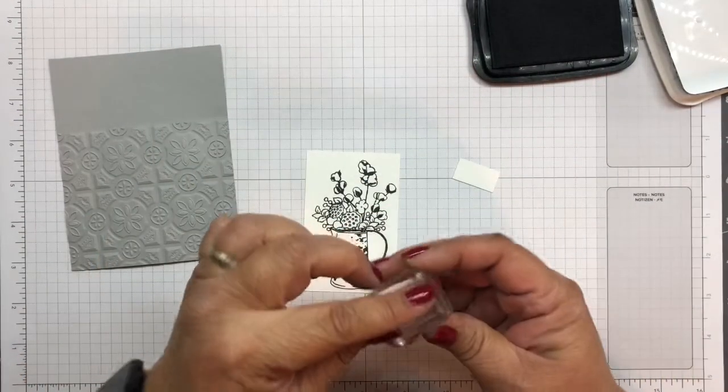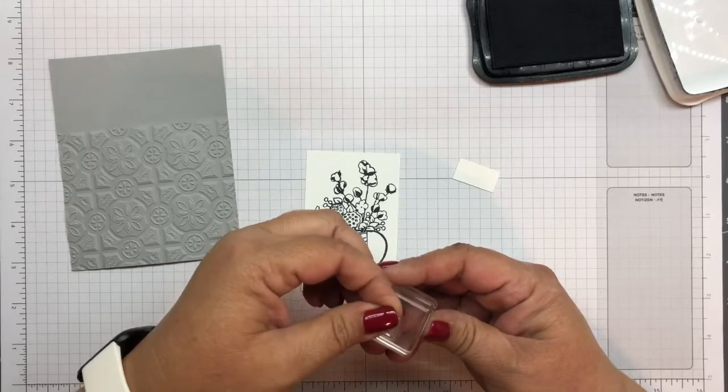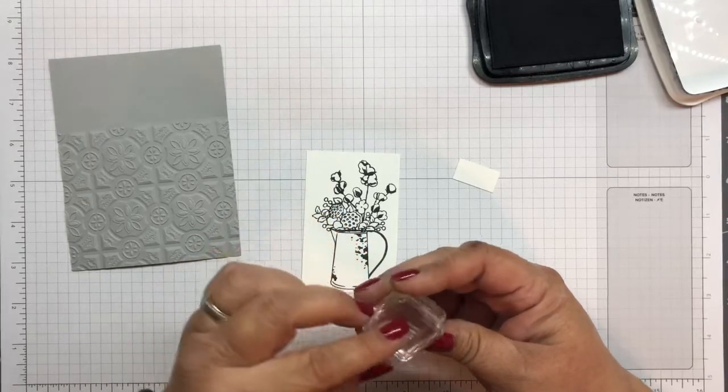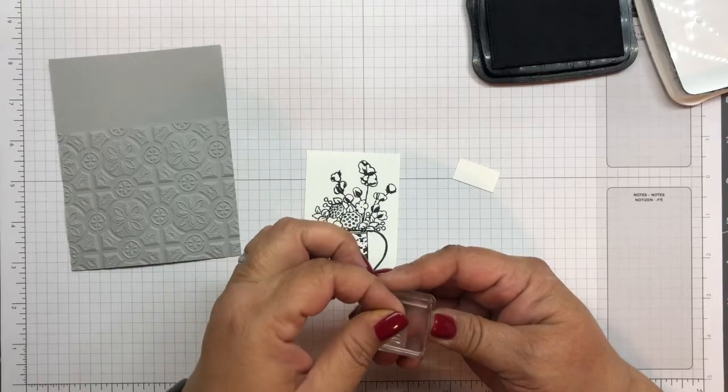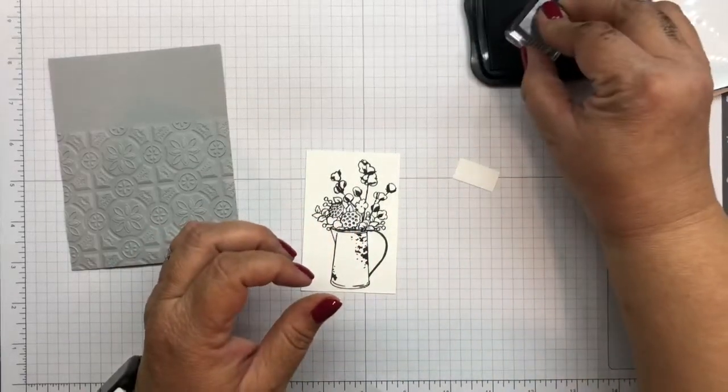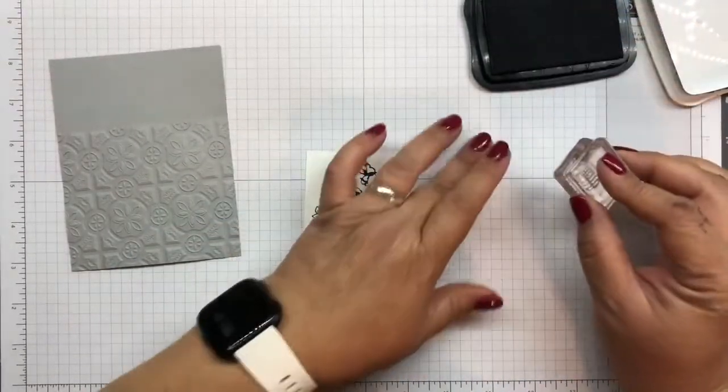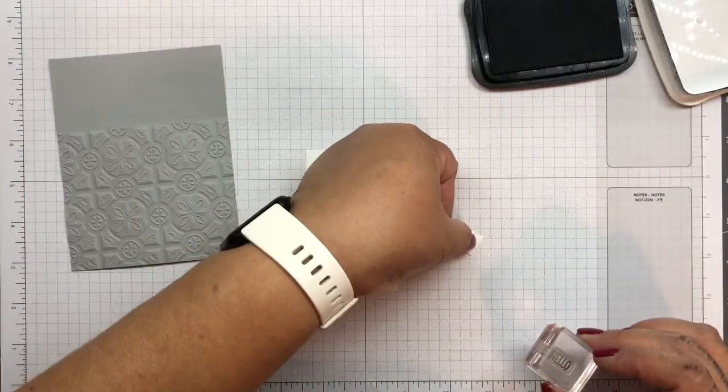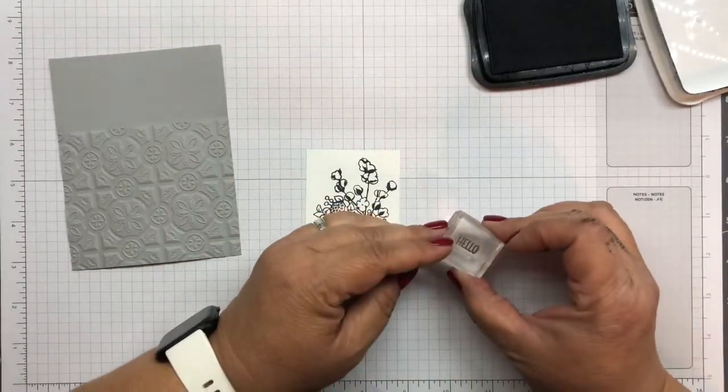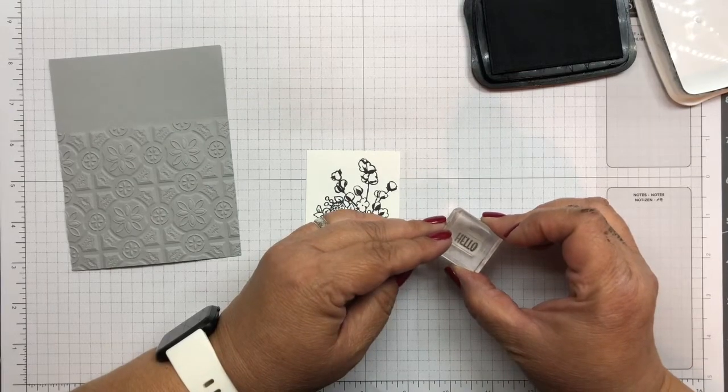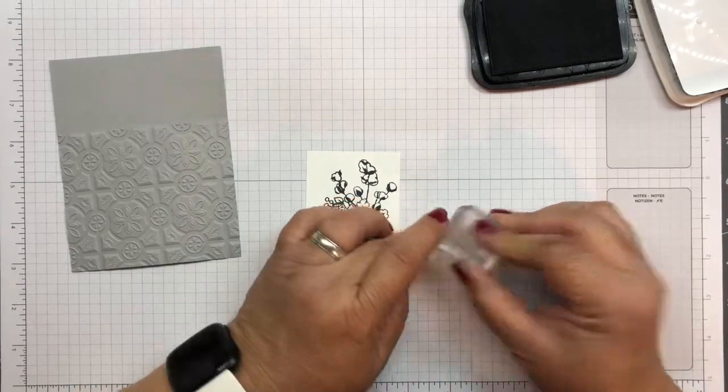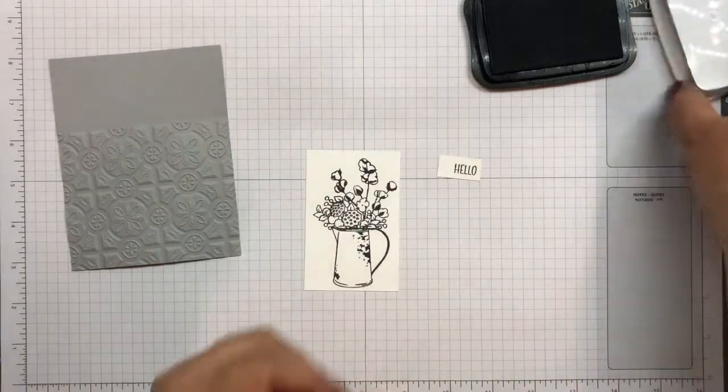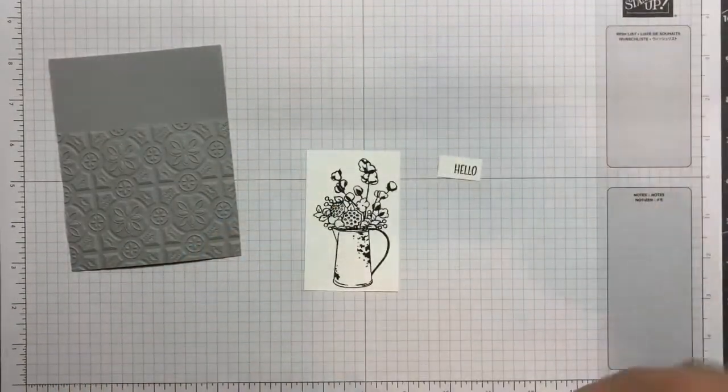Alright, and then we're going to take our hello. Let me just put that in there in the middle. And we're going to ink this up. And I'm going to ink it up over. I'm going to have where the E is kind of at the end right here, in the middle. So about like that. Alright, now we're done with all of our inking. So we're going to just go ahead and put our card together.